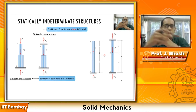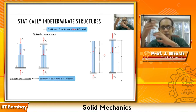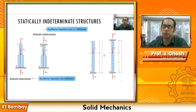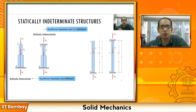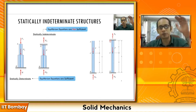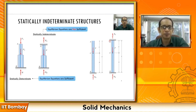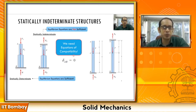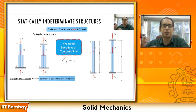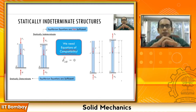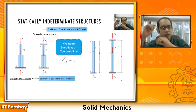How are we going to solve this? This is a simple example, but you can have more complicated loadings and different support conditions — for example, instead of being completely fixed you could have a spring with a certain stiffness, so you would get something intermediate rather than zero deformation. To solve this we are going to make use of the equations of compatibility.